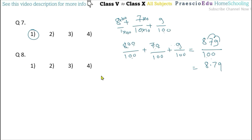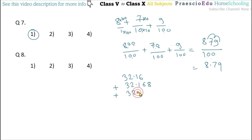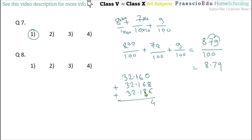Now question number 8: 32.16 plus 32.168 plus 32.186. Keeping all digit place values aligned — units, 10ths, 100ths, 1000ths — and maintaining 0 where needed: 8 plus 6 is 14, carry 1; 1 plus 8 is 9; 9 plus 1 plus 2 is 12, carry; giving 5.14. Then 3 times 2 is 6 and 3 times 3 is 9, so 96.514, given in option number 4. Thank you all.